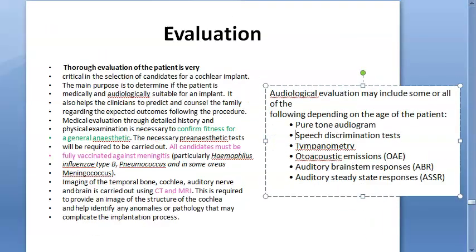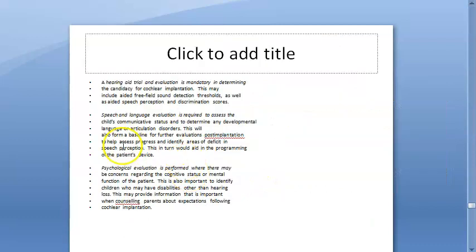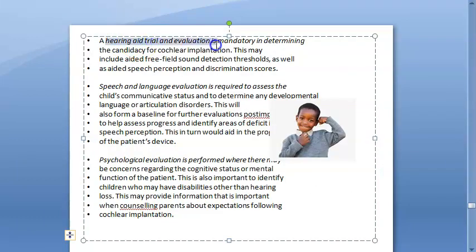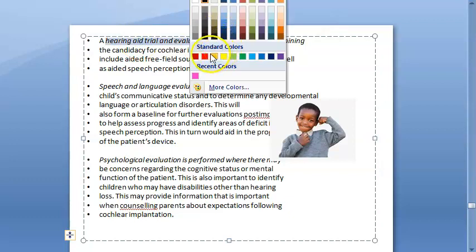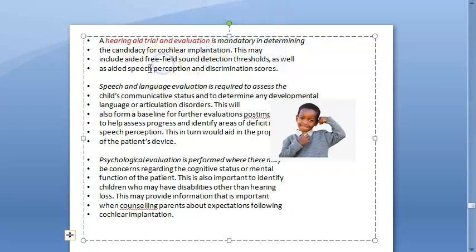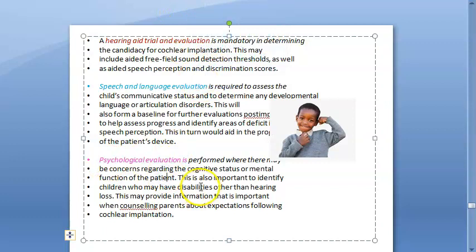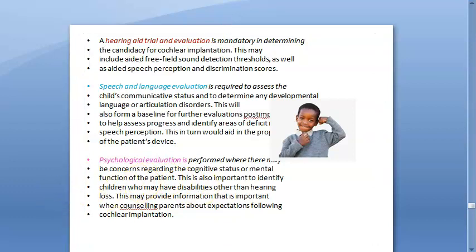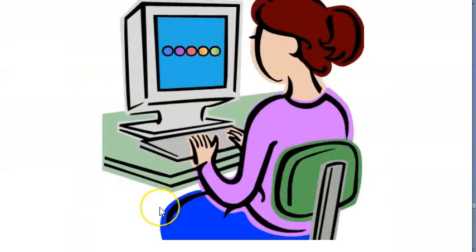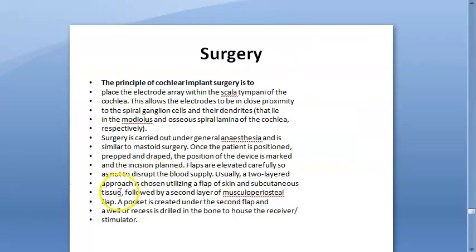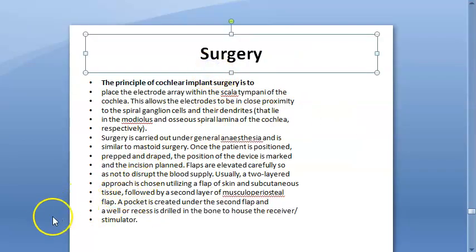Hearing aid trial and evaluation is mandatory - you must do a hearing aid trial. Then speech and language evaluation: understand whether the person is prelingual or postlingual. Psychological evaluation is also done to know the cognitive status - whether they can understand the information they will get after the implant.